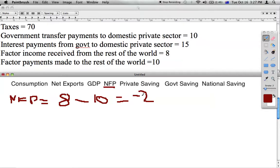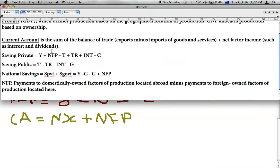So now that we have net factor payments, the next one I would look to solve would be net exports. The formula I would use is current account equals net exports plus net factor payments. The current account is the sum of the balance of trade, so it's your exports minus your imports, i.e. net exports, plus your net factor income which we discussed before.